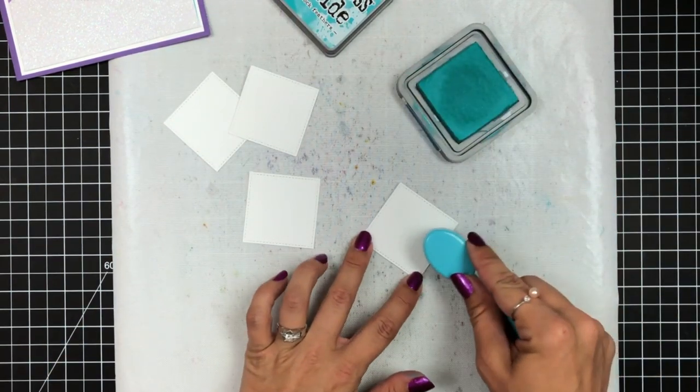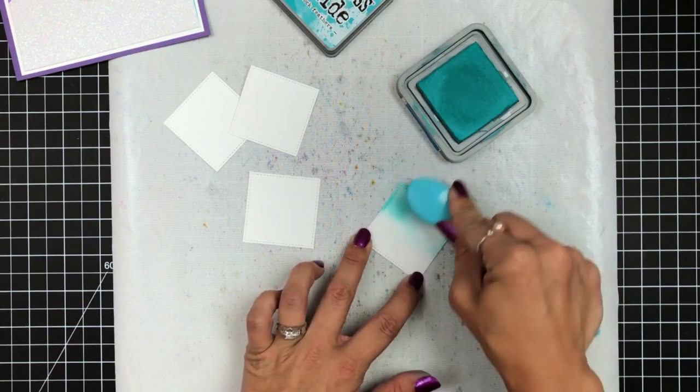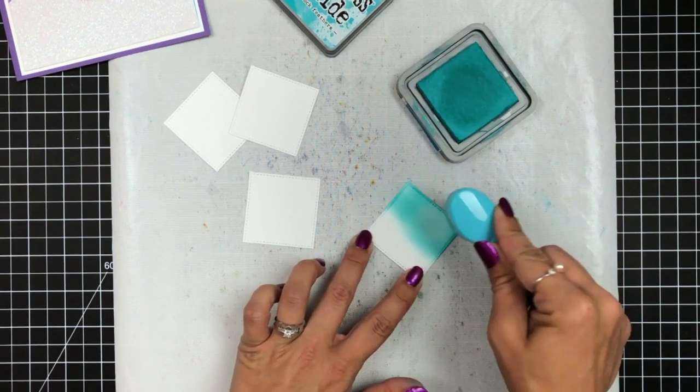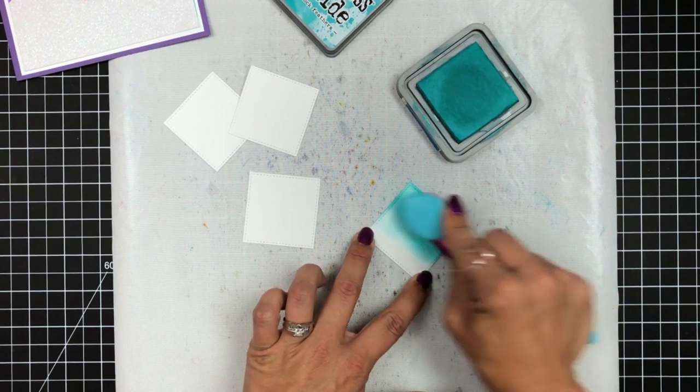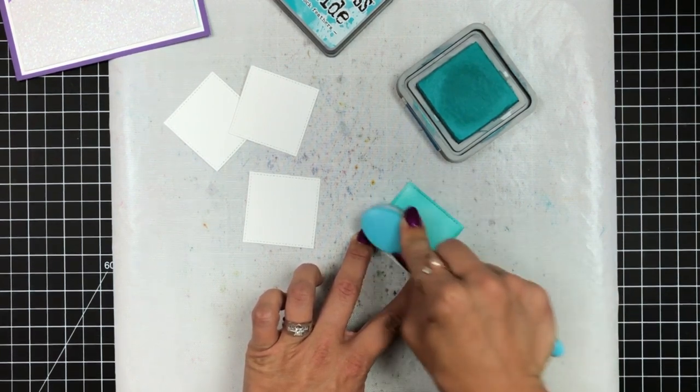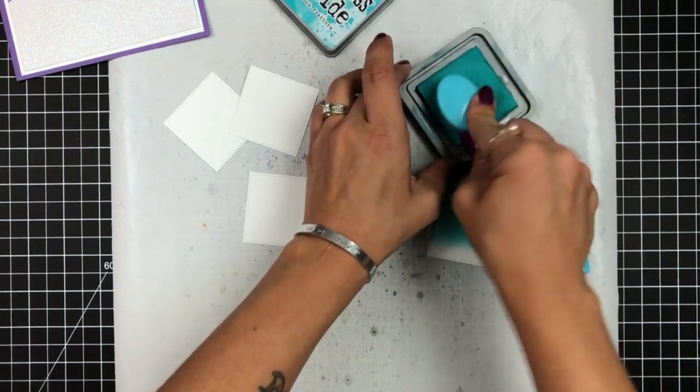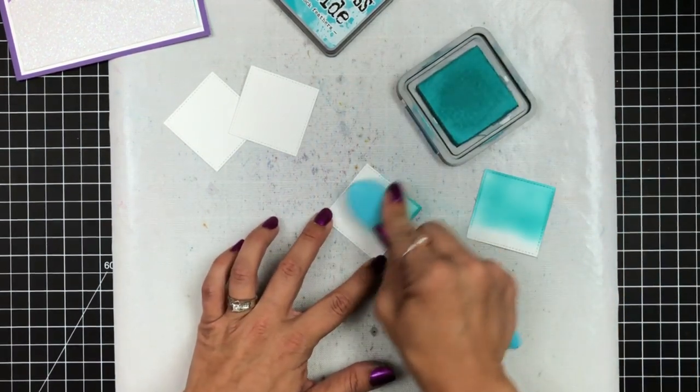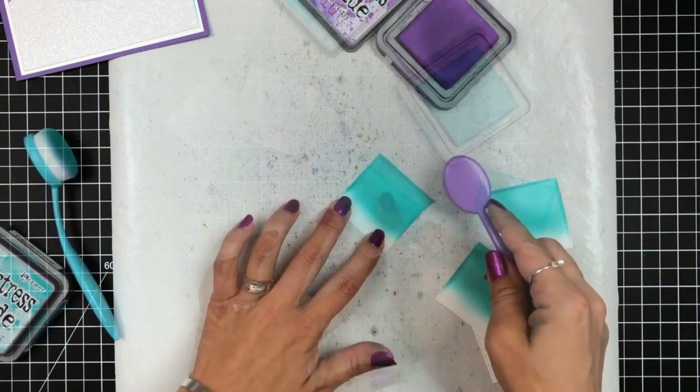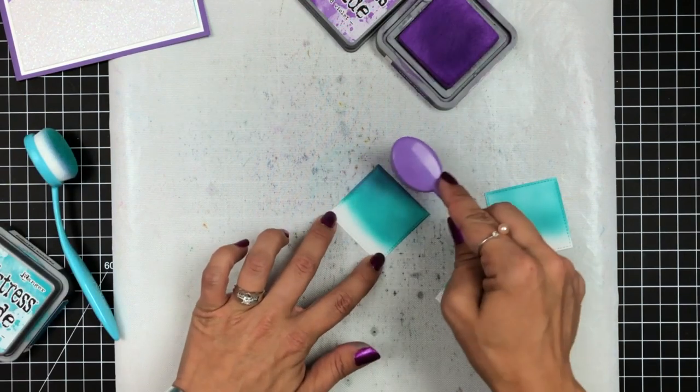Now for my actual flip portion, I die cut four squares from white cardstock. These are the smallest square from the Flippin' Awesome die. I'm going to ink blend all of these to match my background, so I'm going to create all of them the same way, starting off with the Peacock Feathers, then coming in with the Wilted Violet.